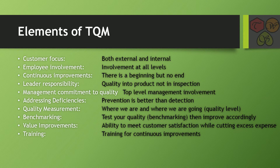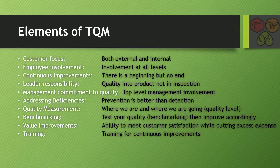The sixth one is addressing deficiencies. This means prevention is better than detection — quality should be enabled into the manufacturing process, not in the inspection methods.